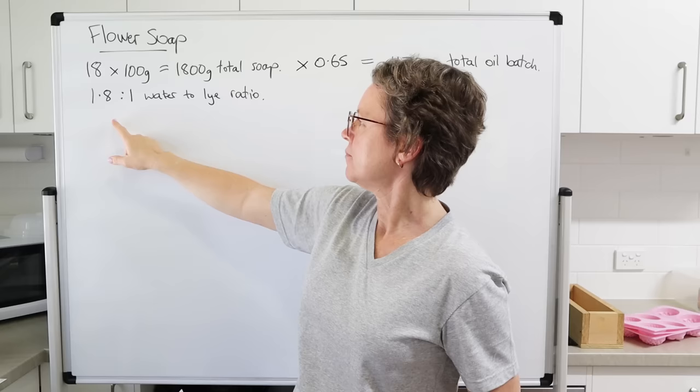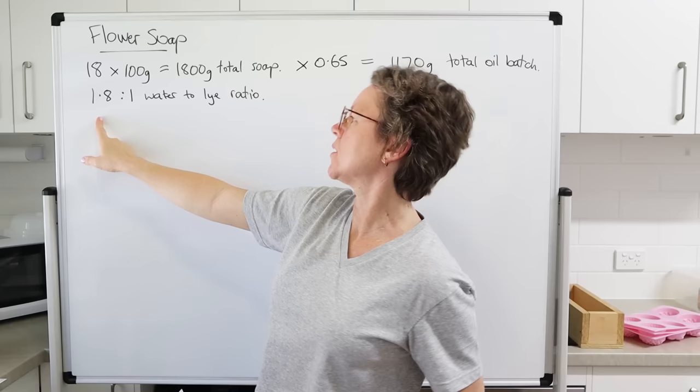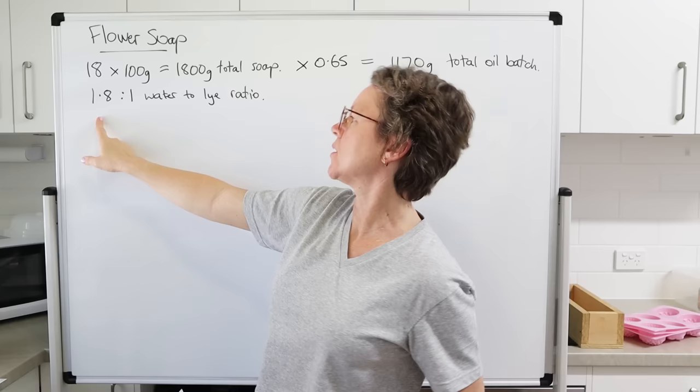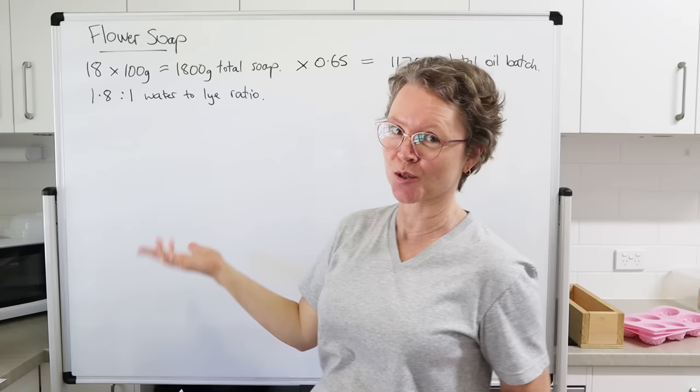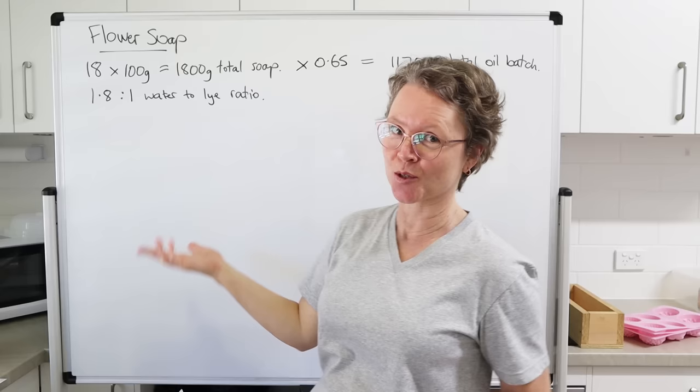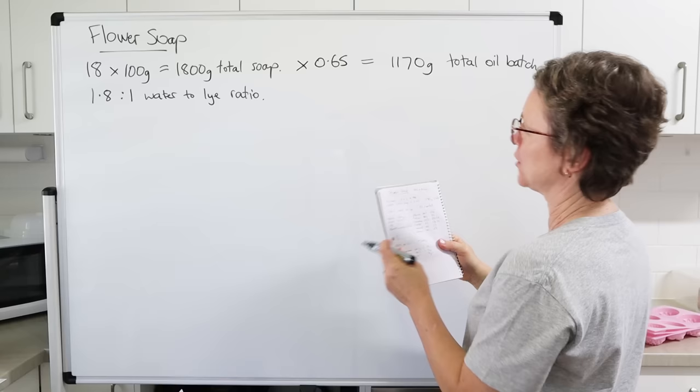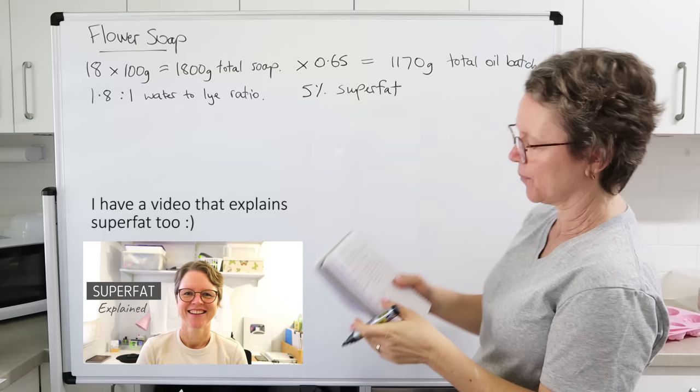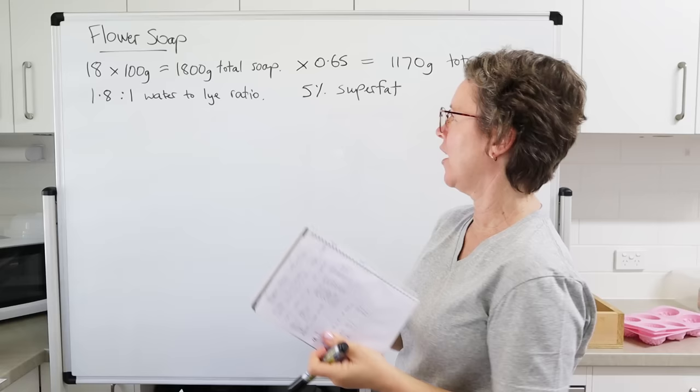So it's 1 part lye and 1.8 parts water. But you don't need to know what that gram amount is ahead of time — you just enter the ratio into the soap calculator and it will tell you the actual gram amount for water. You also need to decide your superfat. I'm just going to stick with a standard 5% superfat for this recipe. It's not too high, it's not too low — it's just good.